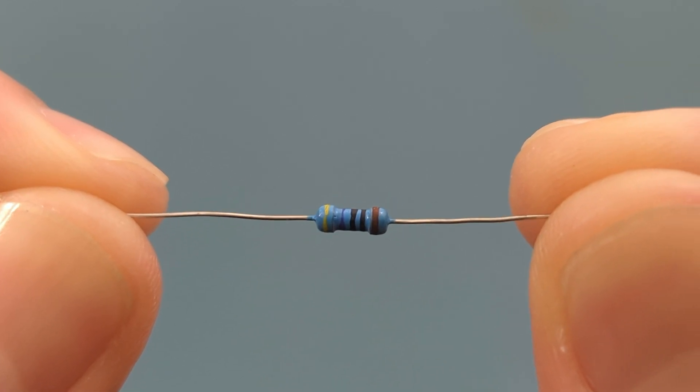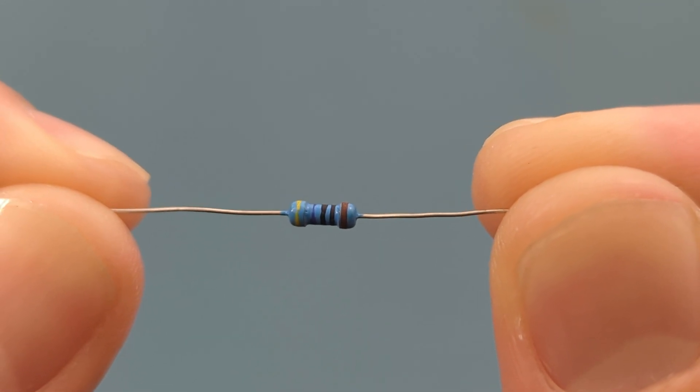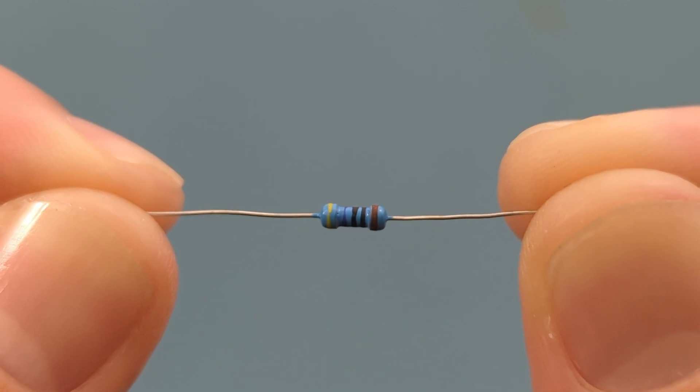Have you ever wondered what those colorful stripes on a resistor actually mean? Hey guys, in this video I'm going to show you how to determine the value of a 4-band or 5-band resistor by reading the resistor color code.